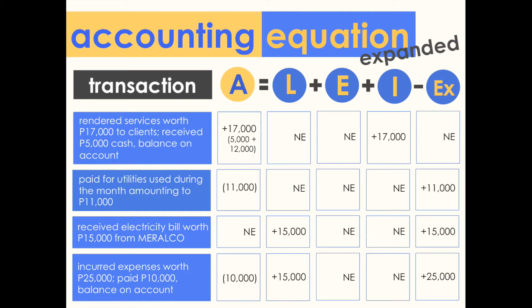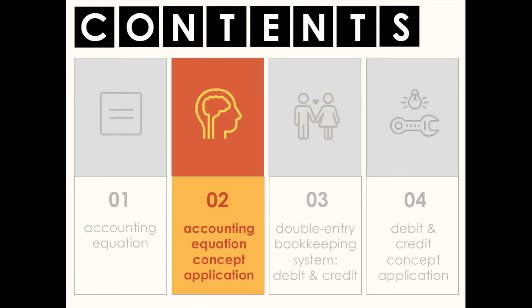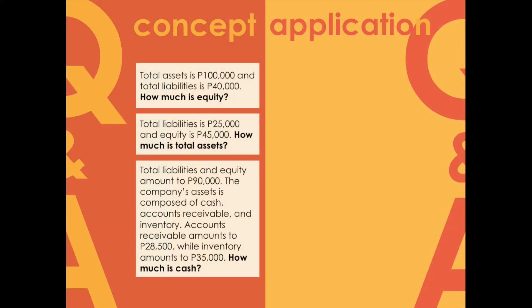Now let's apply the accounting equation on some sample problems. Problem one: total assets is 100,000 pesos and total liabilities is 40,000 pesos — how much is equity? Using the accounting equation: 100,000 equals 40,000 plus x. Solving for x, we get equity of 60,000 pesos. Problem two: total liabilities is 25,000 pesos and equity is 45,000 pesos — how much is total assets? Adding liabilities of 25,000 and equity of 45,000 we get total assets of 70,000 pesos.